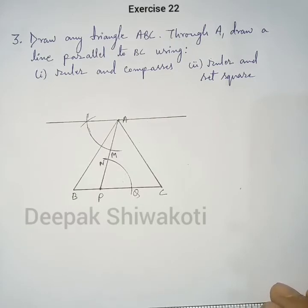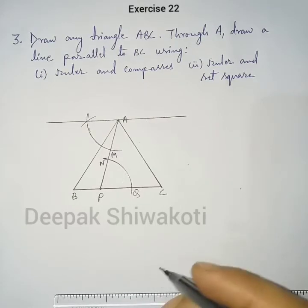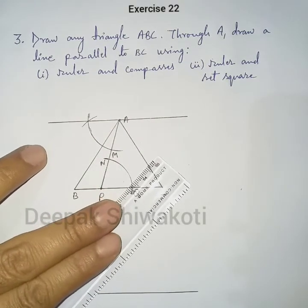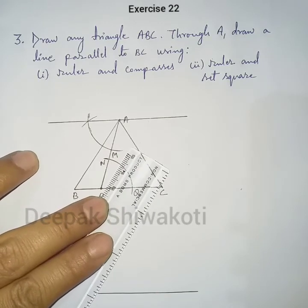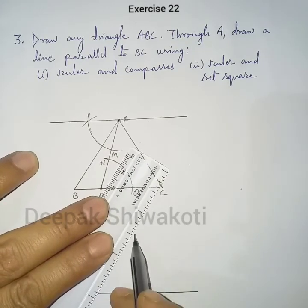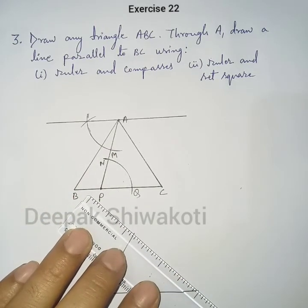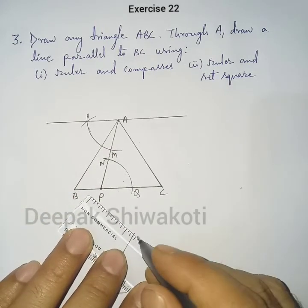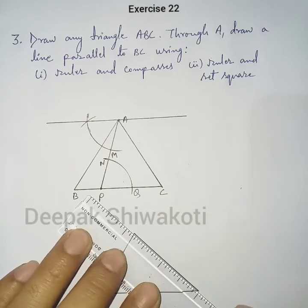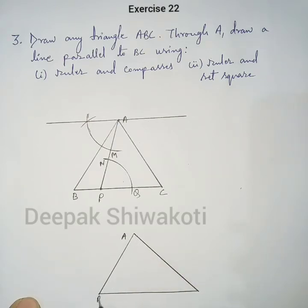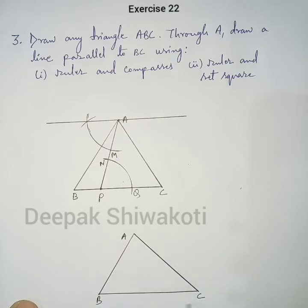Now for method two using ruler and set square, make a triangle of your own. Here is triangle ABC. We have to make a line through A parallel to BC.